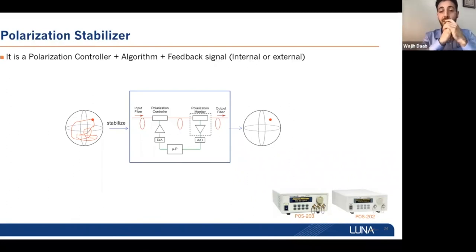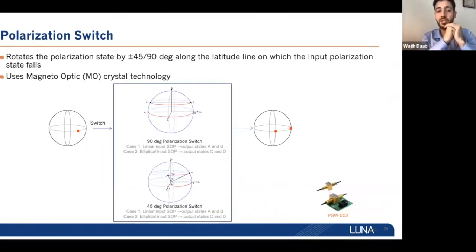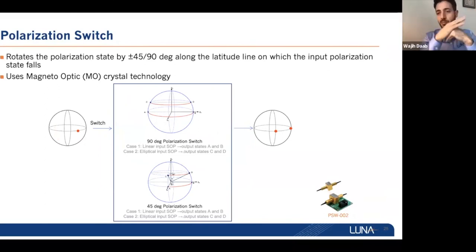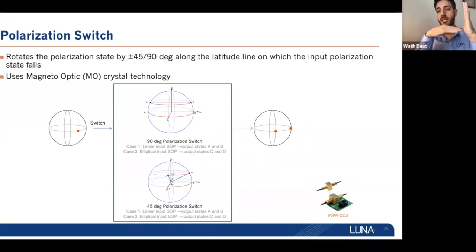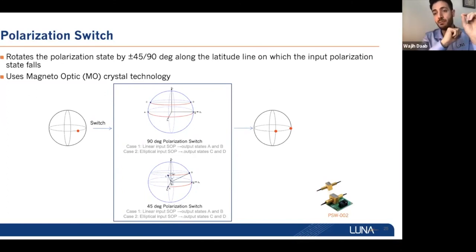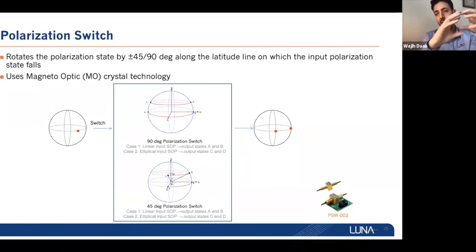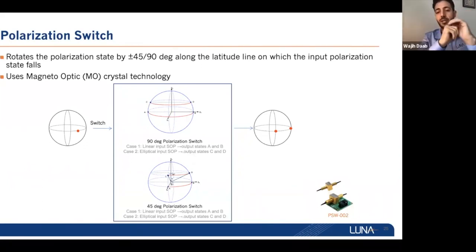For polarization switches — in fiber optic system design, especially for fiber sensing, customers make measurements on two orthogonal polarization states to mitigate polarization sensitivity. We offer a polarization switch that comes with either plus/minus 45 degrees or plus/minus 90 degrees depending on the input polarization state. This is not based on fiber squeezing — it's based on magneto-optic crystals. We apply current, which generates an electromagnetic field that rotates the state of polarization. It's solid state, with about 100 microsecond switching speed.